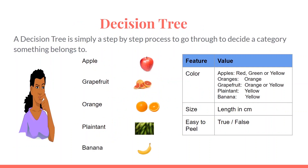Decision trees are the core components of the Random Forest algorithm. A decision tree is simply a step-by-step process to decide which category something belongs to. For example, suppose you have a set of fruits — apples, grapefruits, oranges, plantains, and bananas — and you want to train someone to categorize them using the features of the fruits.